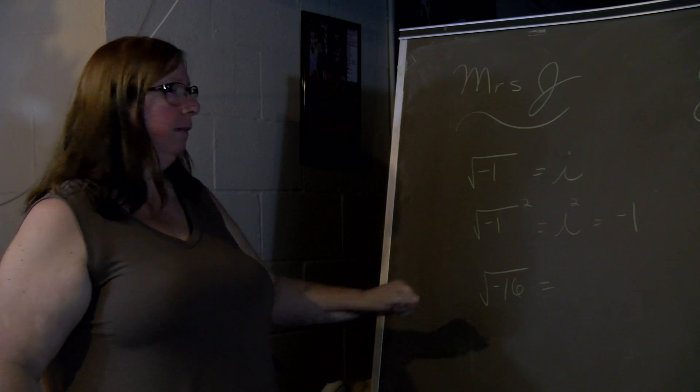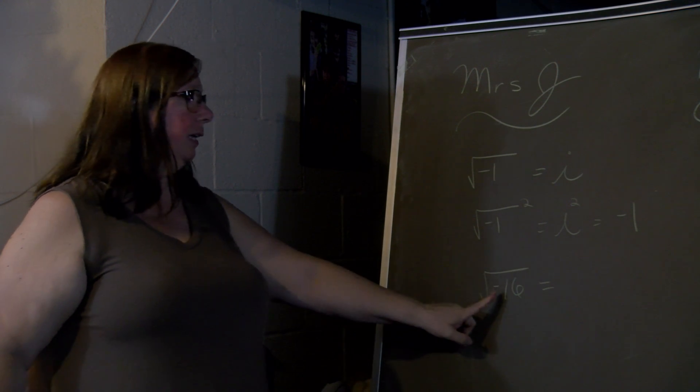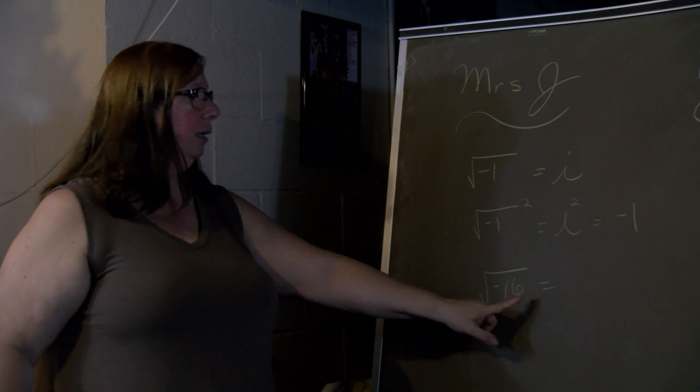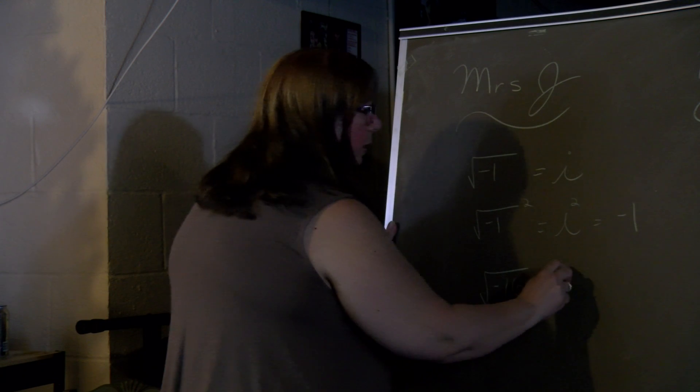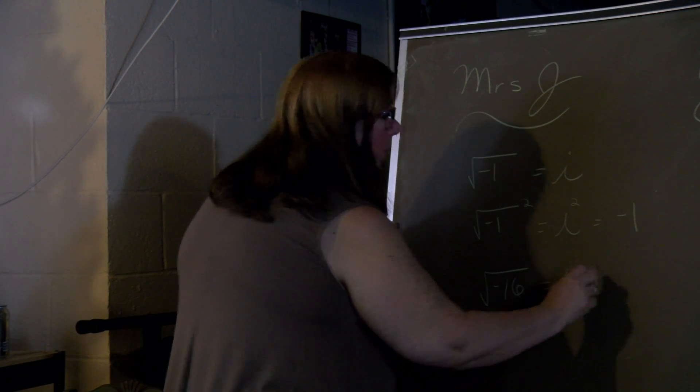So if we're finding the square root of negative 16, the negative becomes an i, and the square root of 16 we know is 4. So it's 4i.